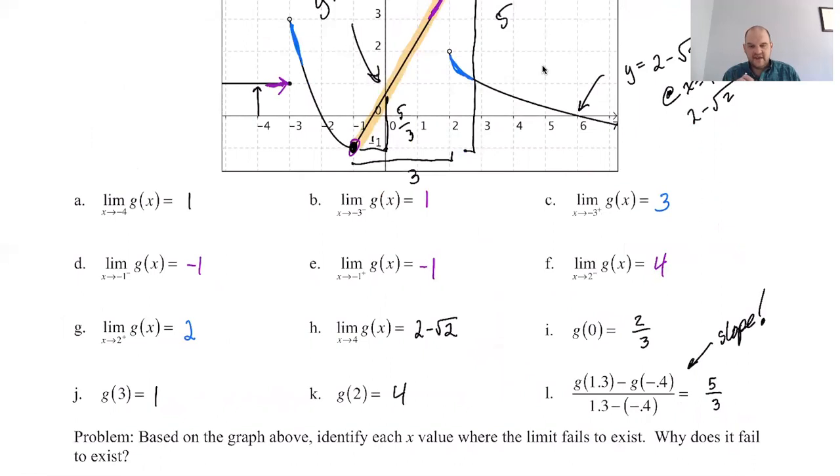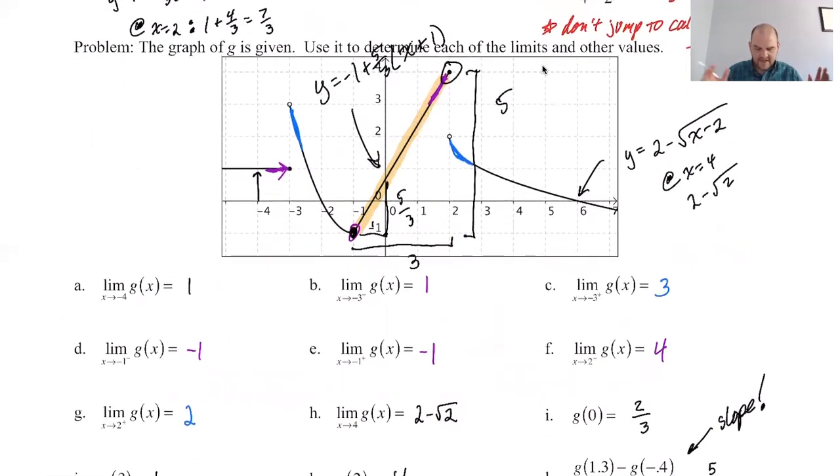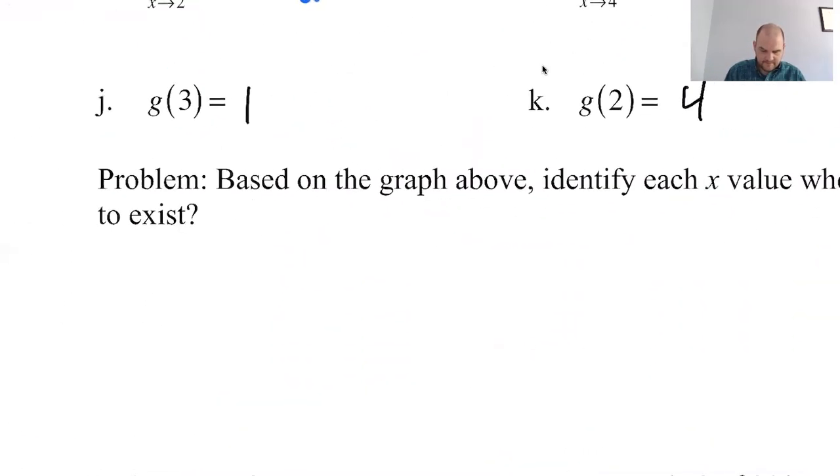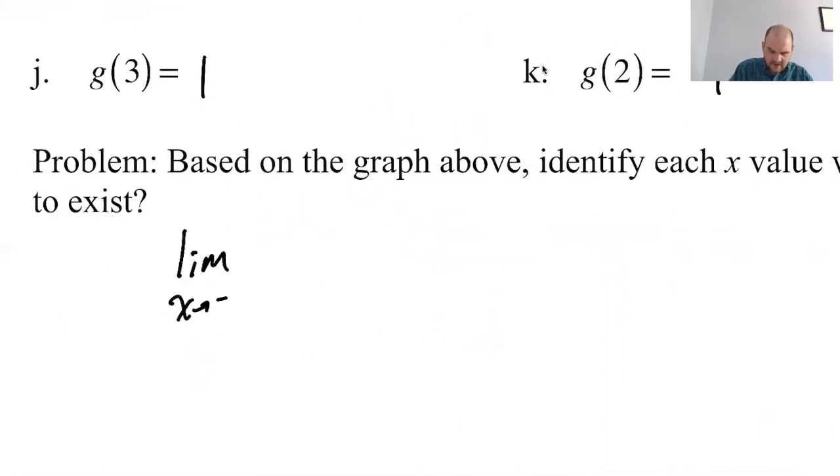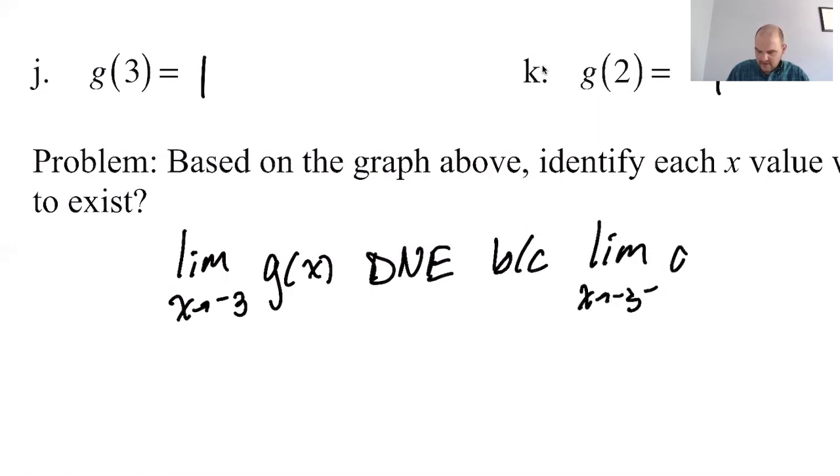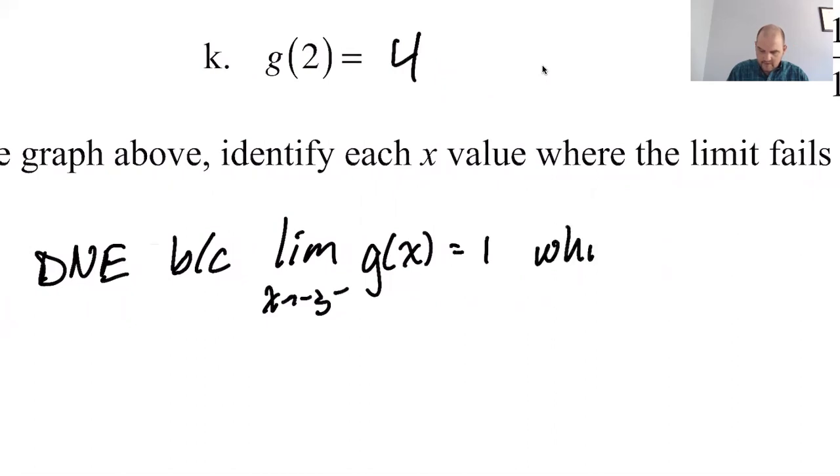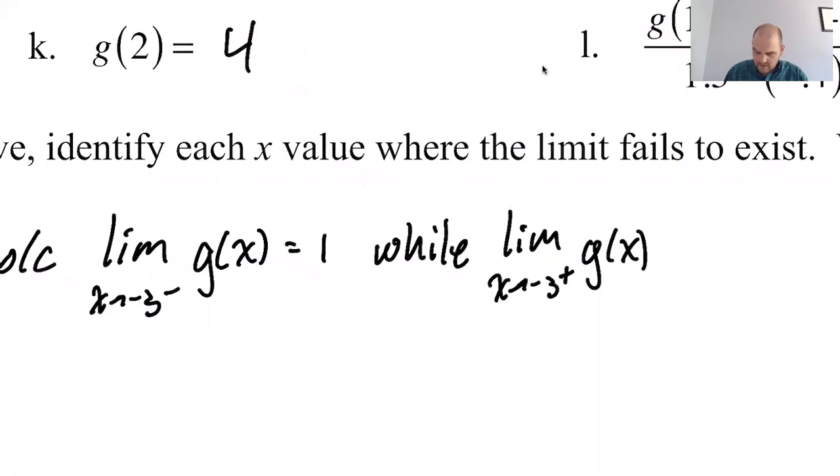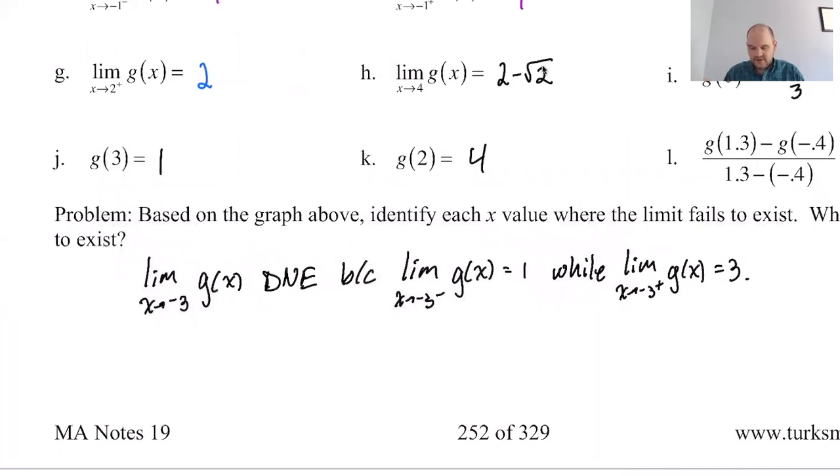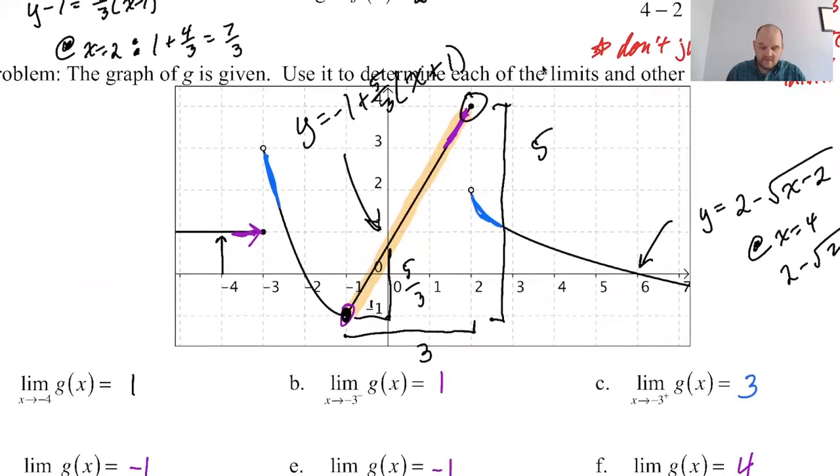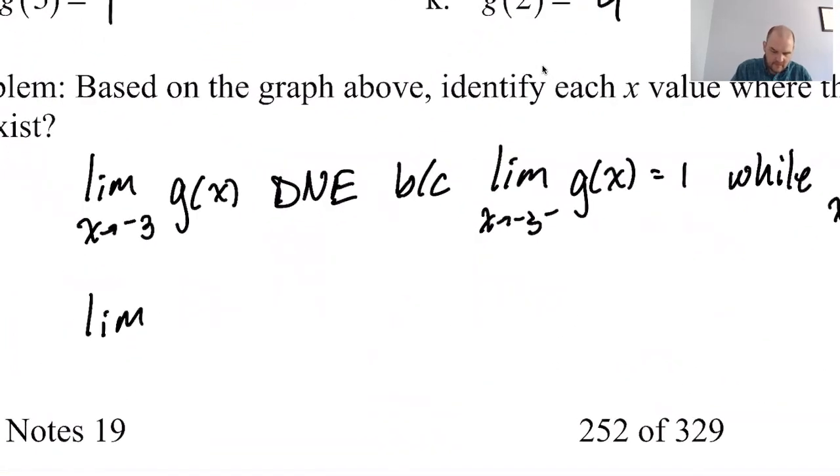And then we got this question. Based on the graph above, identify each x value where the limit fails to exist. Why does it fail to exist? That's why I didn't ask you for those limits in the last thing. So where does the limit fail to exist? Well, negative three, definitely at negative three. So I'm going to say the limit as x approaches negative three of, oh, it's actually g of x. g of x does not exist because the limit as x approaches negative three from the left of g of x. So see, I'm writing all this out. It's like calculus is a lot of writing. The limit from the left is one, while the limit as x approaches negative three from the right is whatever we got is three. So that is why the limit doesn't exist.